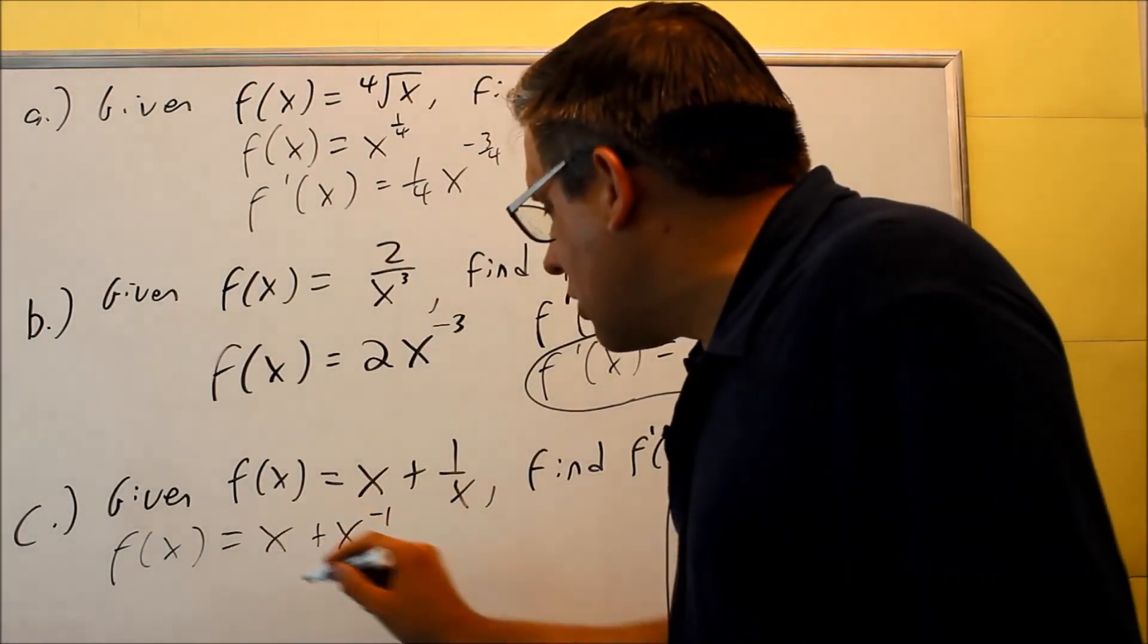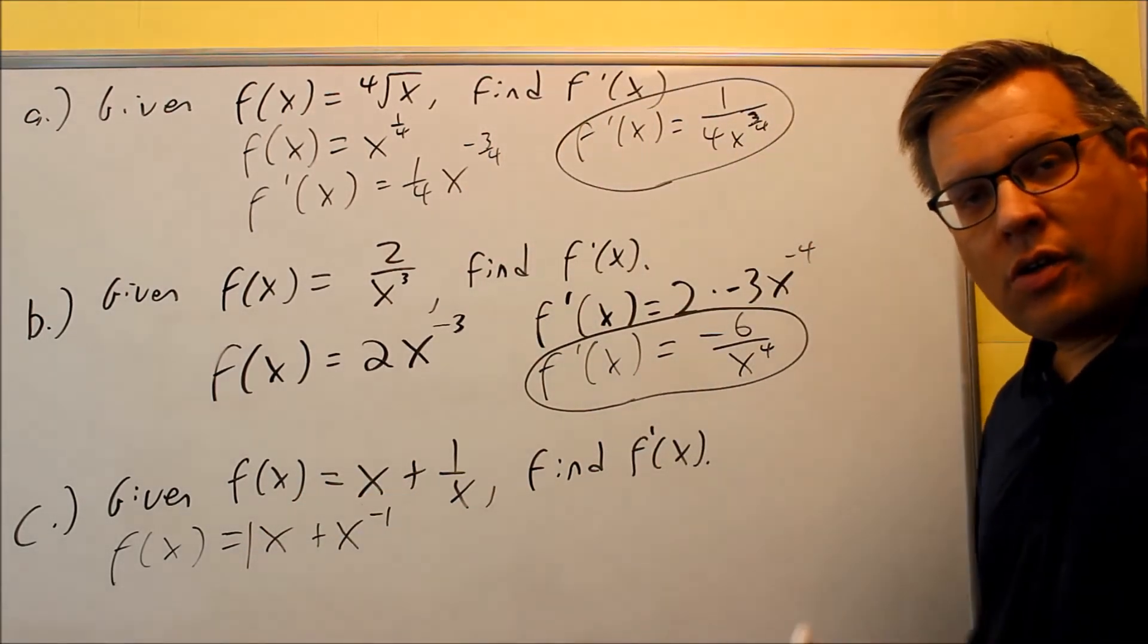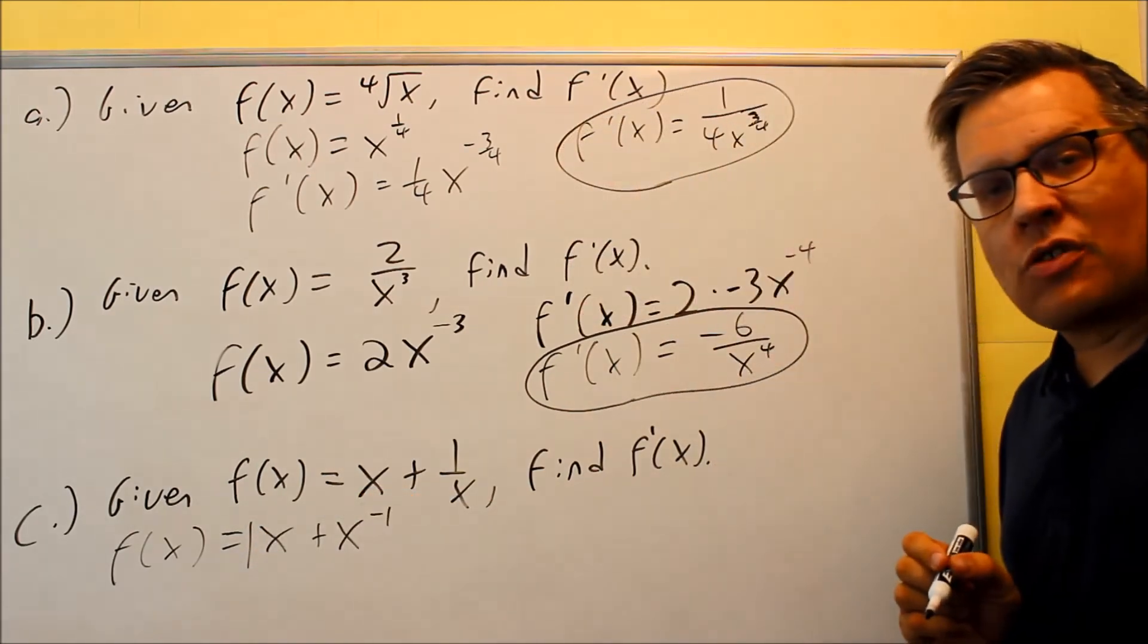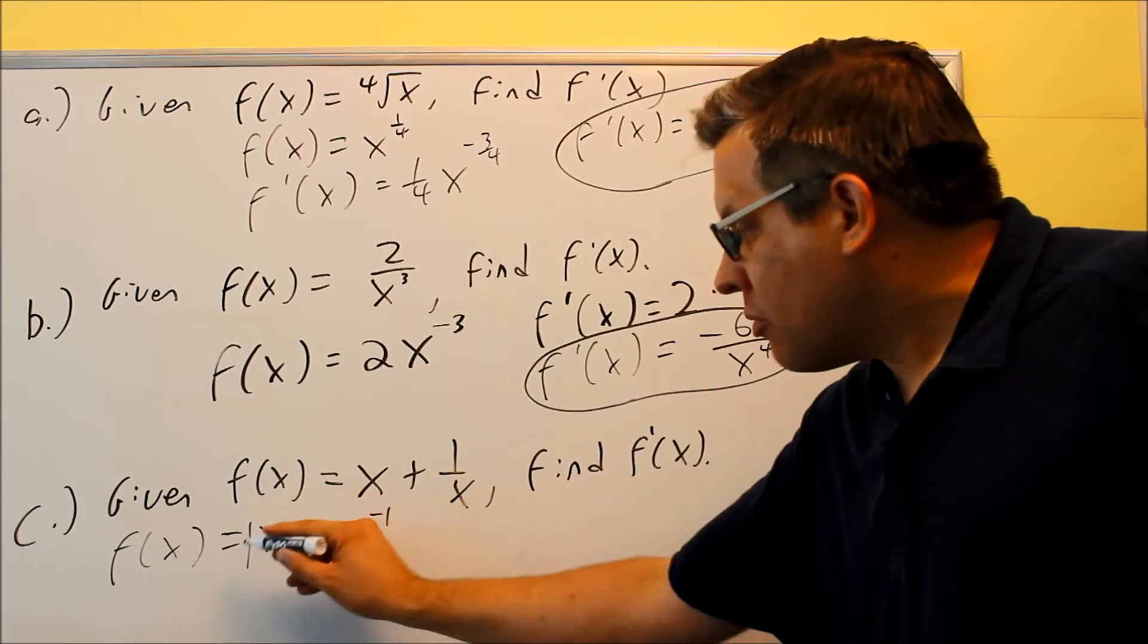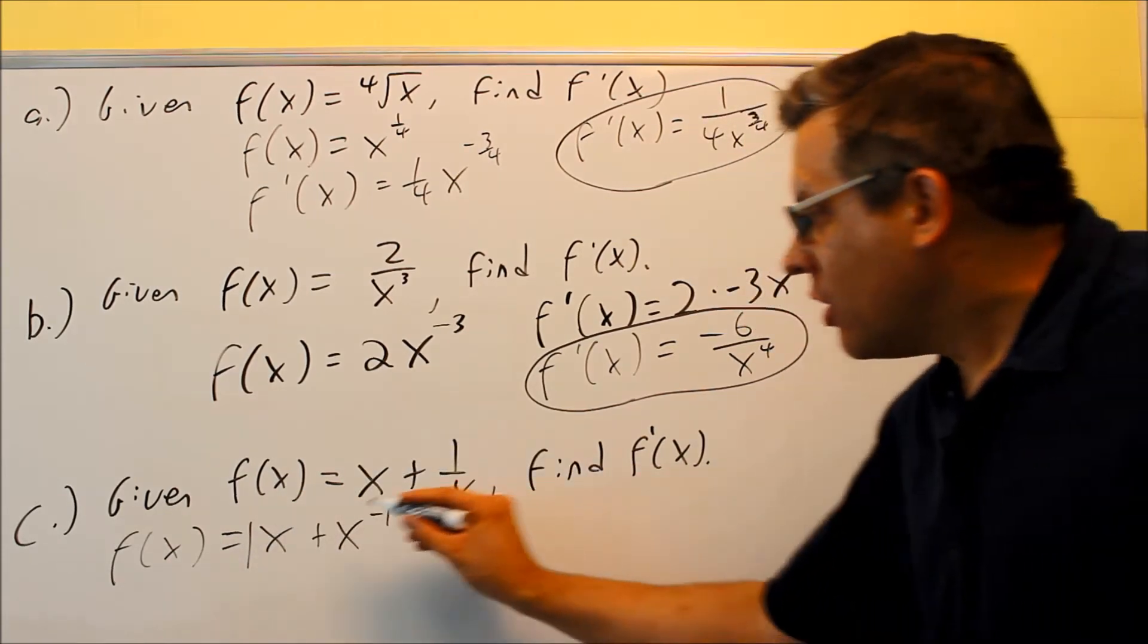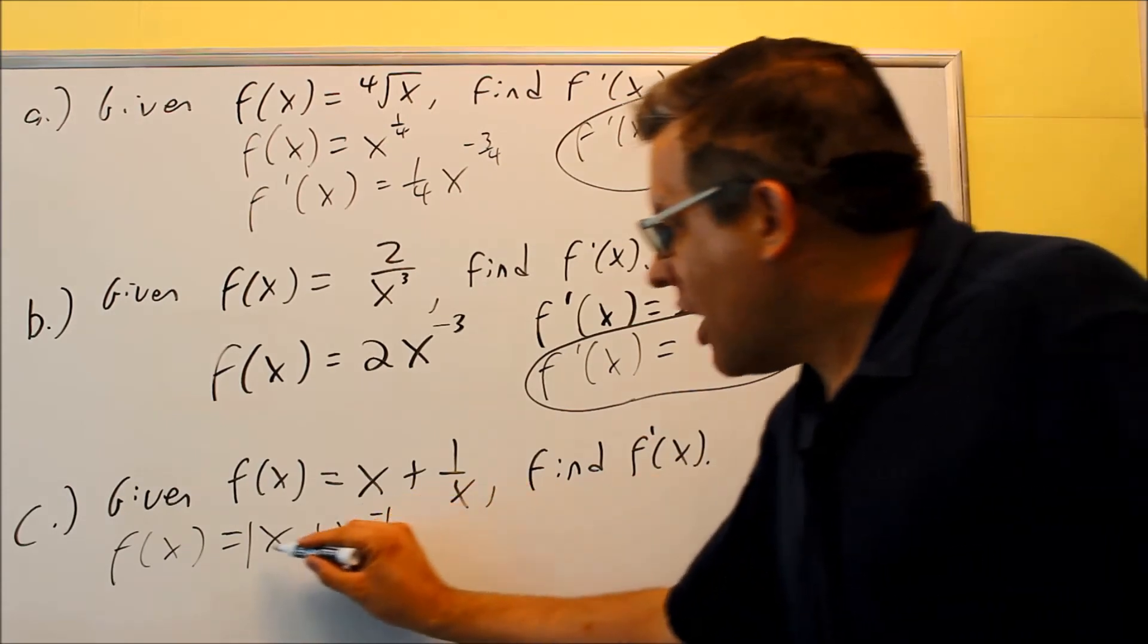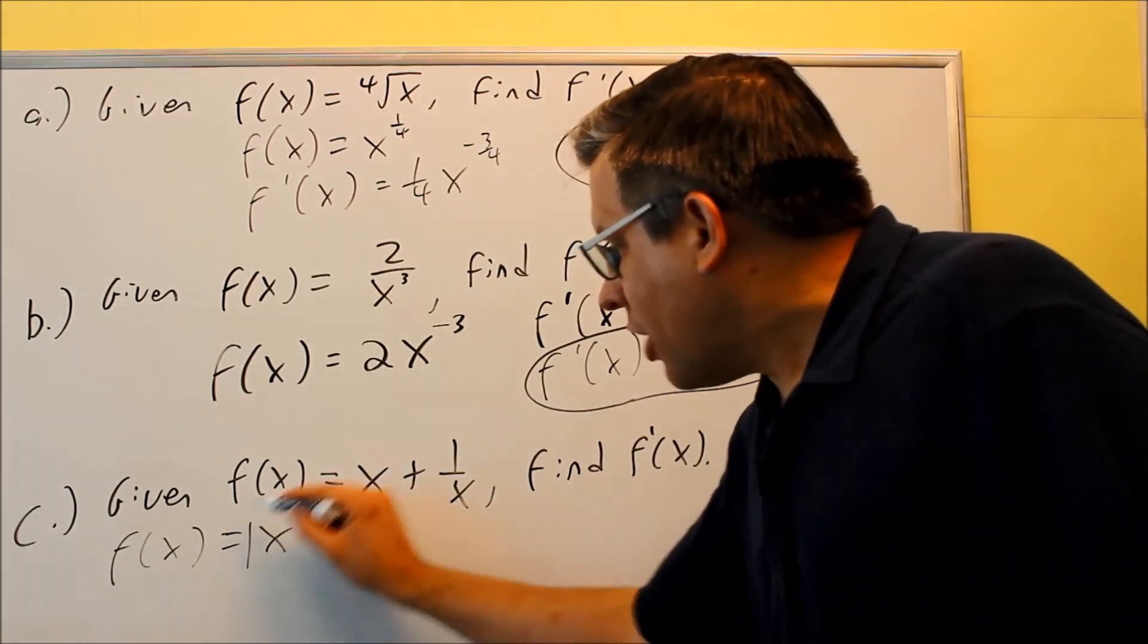With this, whenever you have an x that's raised to the first power, the shortcut way of finding the derivative is just simply write the coefficient that comes in front. Remember, there's a 1 that's here, and when we apply the power rule, 1 comes down, subtract 1 from the exponent, you're always going to get x to the 0 power. So whenever you have just x by itself, the answer is just going to be the number in front.